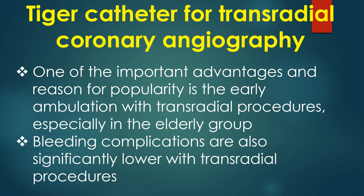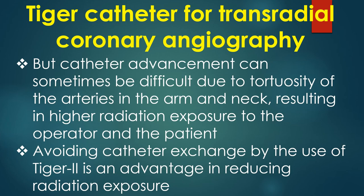One important advantage and reason for the popularity of transradial procedures is early ambulation, especially in the elderly group. Bleeding complications are also significantly lower with transradial procedures. However, catheter advancement can sometimes be difficult due to tortuosity of the arteries in the arm and neck, resulting in higher radiation exposure to both the operator and the patient. Avoiding catheter exchange by using the TIGER II is therefore an advantage in reducing radiation exposure.